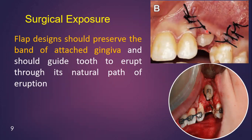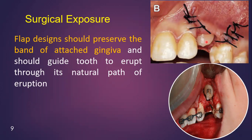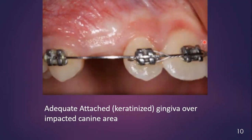How should the flap be designed for surgical exposure of the maxillary impacted canine? It should be designed in such a way that you preserve the band of attached gingiva. Here you can see a four-corner flap that is apically positioned, maintaining an intact attached gingiva. You should not remove this portion of the gingiva, and the flap should be designed so that it does not obstruct the path of eruption. It should guide or facilitate eruption of the maxillary canine.